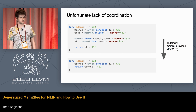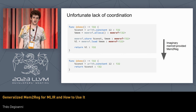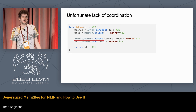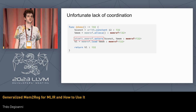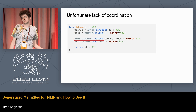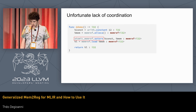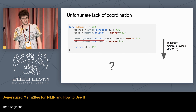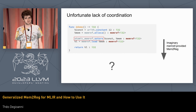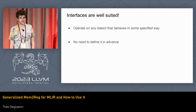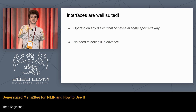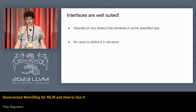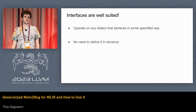But now imagine I'm a downstream user and I create a custom dialect — a sidecar dialect for memref that declares atomic stores. Suddenly the provided implementation doesn't work because it doesn't know what atomic stores are. MLIR provides a great solution for this: interfaces. You can specify for each operation of a dialect how they behave related to some property of interest, and you don't have to define a list in advance. So that's perfect in this case. Then what we need to decide is how to encode Mem2Reg semantics in interfaces.